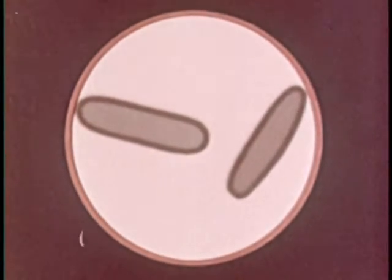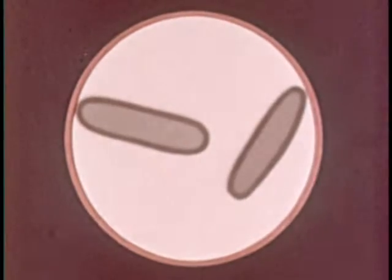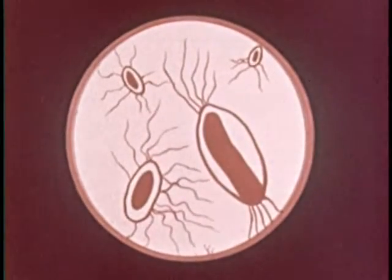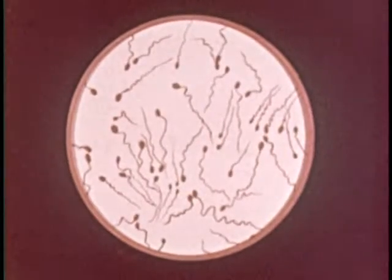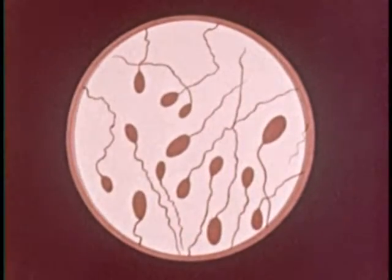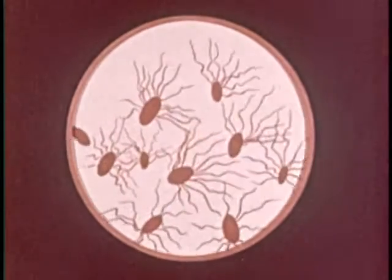Besides protective mechanisms, some bacteria are equipped to move about. The hair- or whip-like parts attached to these bacterium cells are called flagella. Different types of bacteria have different types of flagella. Such flagella can be moved to propel a living bacterium through blood or other solutions. Not all bacteria have such means of locomotion.